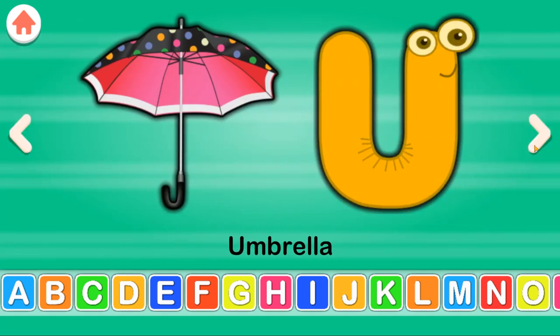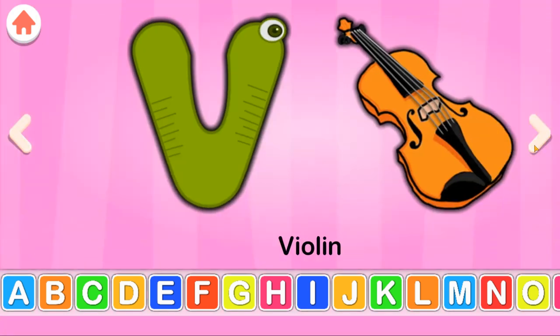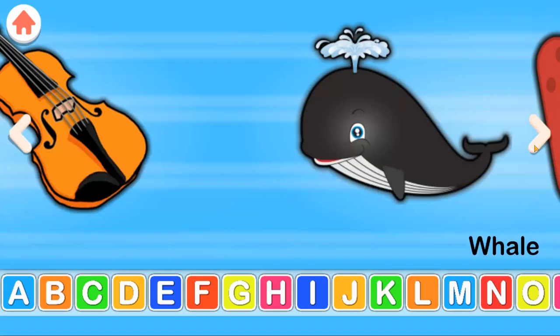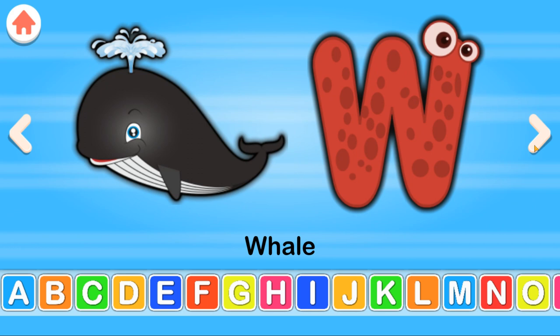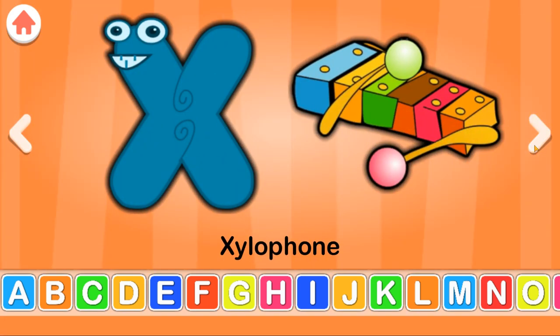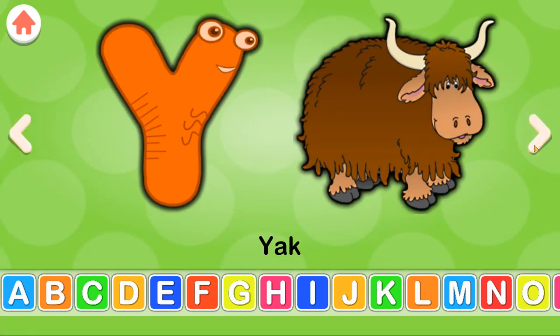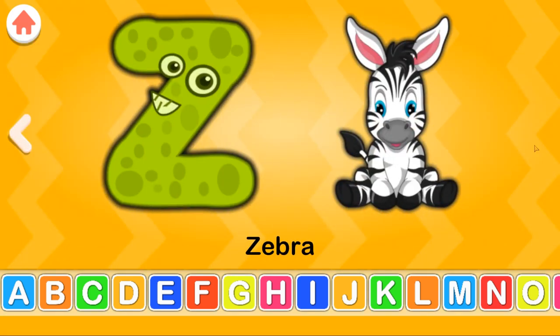U for umbrella, V for violin, W for whale, X for xylophone, Y for yak, Z for zebra.